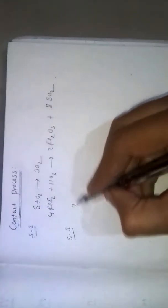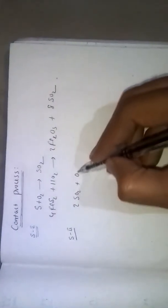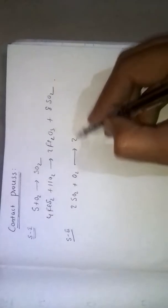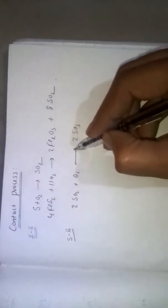2SO2 plus O2 gives 2SO3. This is a reversible reaction, so here optimum conditions are required.